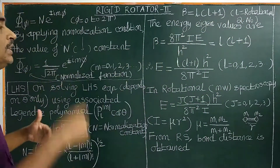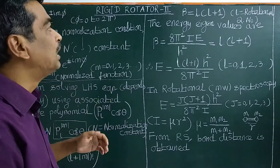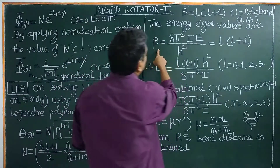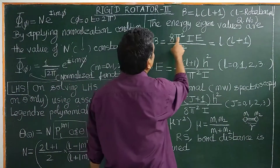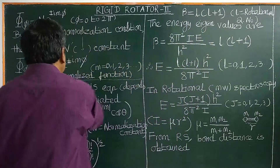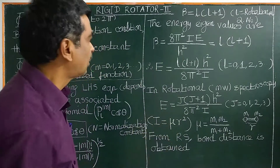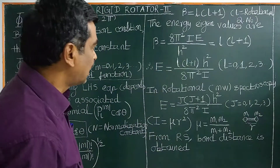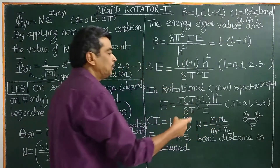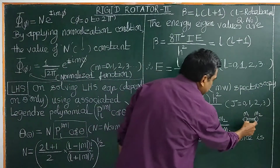The eigen energy E from H-cap psi equal to E psi: from part 1, beta equals 8 pi squared I times E divided by H squared. We have now obtained beta equal to L(L+1) from the left-hand side equation. Therefore E equals L(L+1) H squared divided by 8 pi squared I, where I is the moment of inertia, given by I equals mu R squared, mu is the reduced mass, M1 and M2 are the masses of the two atoms, and R is the bond distance.